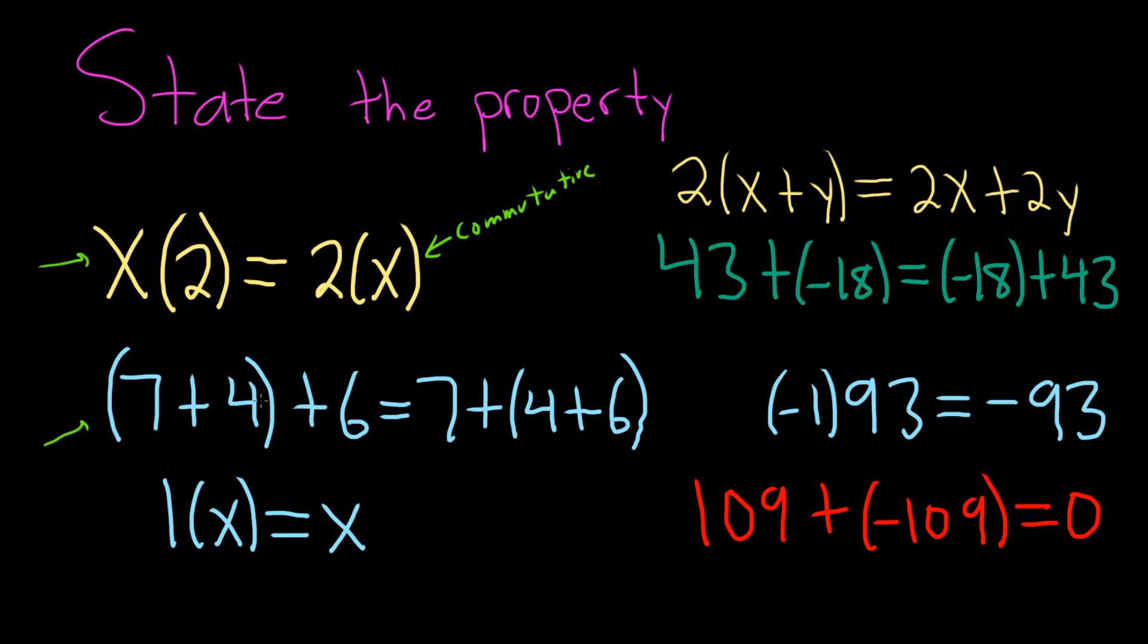This one here is called the associative property of addition. So what it's saying is we have 7 plus 4 and then we add 6. That's the same thing as adding 4 and 6 and then adding 7. So it doesn't matter what gets added first, we end up with the same result. If you do 7 plus 4, you get 11. 11 plus 6 is 17. On the right-hand side, if you do 4 plus 6, you get 10. And then you add 7, you still get 17. So this is called the associative property of addition.